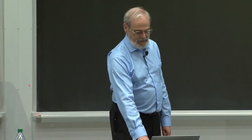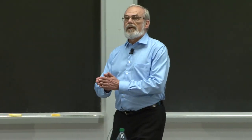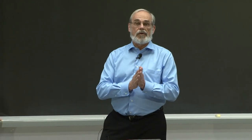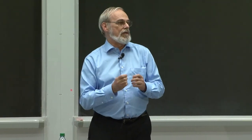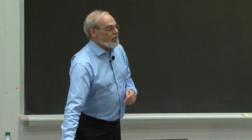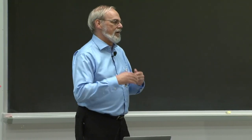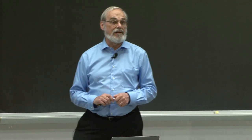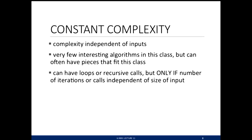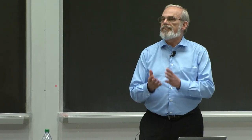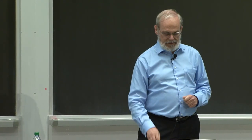I'm going to show examples filling in most of this chart. Algorithms with constant complexity are kind of boring — this says the code runs in basically the same amount of time independent of input size. Note: it doesn't say you can't have a loop or recursive call. You could. It's just that the loop cannot depend on the size of the input. There aren't many interesting algorithms here — we'll see pieces of code that fit into this during analysis.